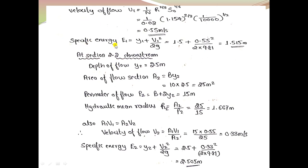At section 2 (Y2 = 2.5 m): A2 = 25 m², perimeter P2 = 15 m, hydraulic radius R2 = 1.667 m. Using continuity A1V1 = A2V2, velocity V2 = A1V1/A2 = 0.33 m/s. Specific energy E2 = Y2 + V2²/2g = 2.505 m.